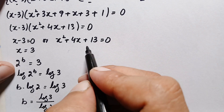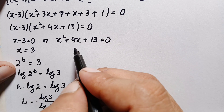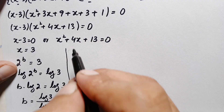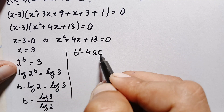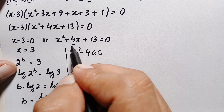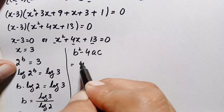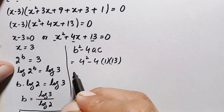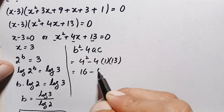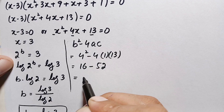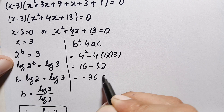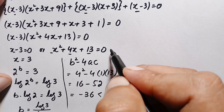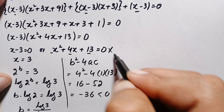Before accepting the quadratic equation x squared plus 4x plus 13 equals 0 as a solution, we check its discriminant: b squared minus 4ac, where b equals 4, a equals 1, c equals 13. This gives 16 minus 52 equals negative 36, which is less than zero. Since the discriminant is negative, the roots are complex, so we reject this solution.